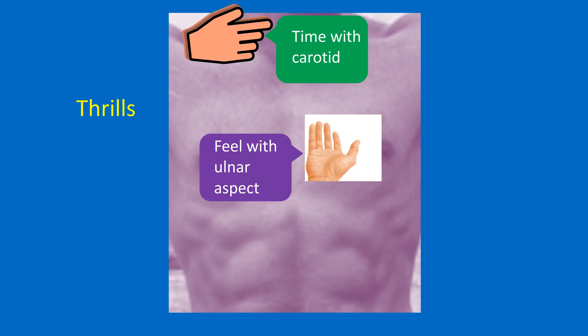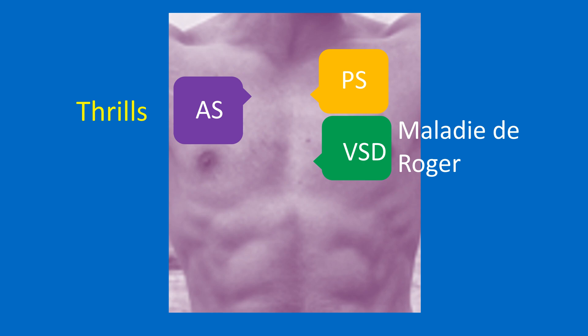Thrills are the palpable counterparts of cardiac murmurs and are generally associated with very loud murmurs of grade 4 and above. They are better appreciated with the ulnar aspect of the palm. Location and timing of the thrill depends on the cause; thrills can be systolic, diastolic, or continuous, and can be timed with respect to the carotid pulse just like murmurs. Thrills of aortic stenosis can be felt in the second right intercostal space or the left parasternal region.